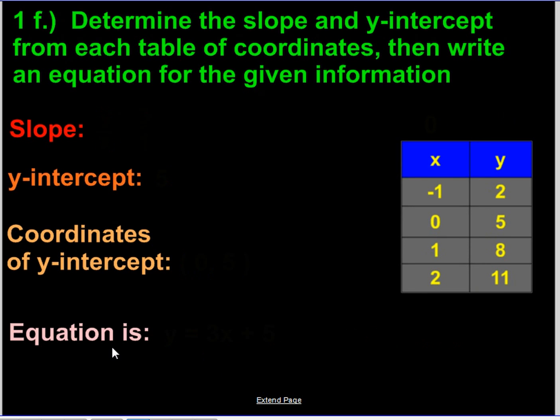Now let's take a look at 1f. If you look at the x coordinates, the change in x seems to be a jump of 1 each time, from negative 1 to 0 to 1 to 2. And if we look at the change in the y value, it's going from 2 to 5 to 8 to 11. So the pattern here seems to be that it's increasing by 3 each time.